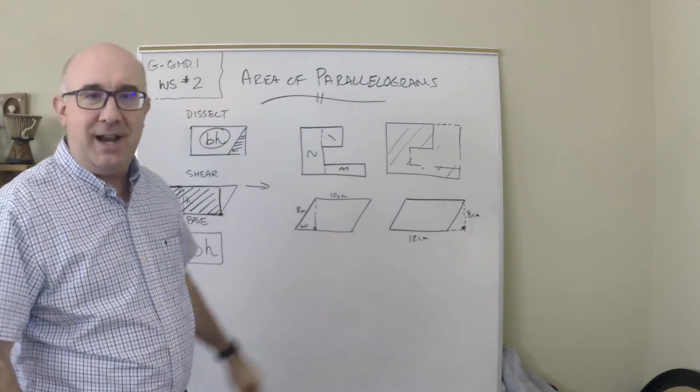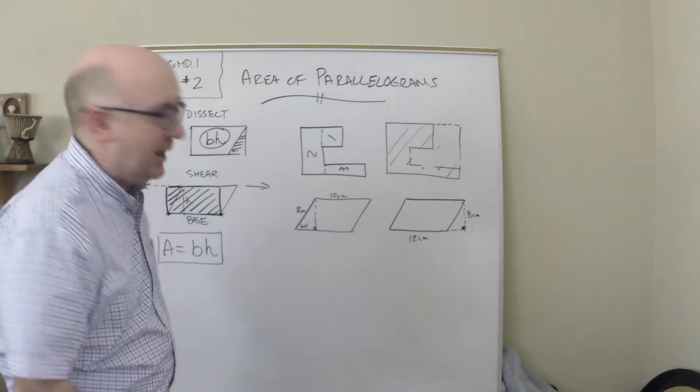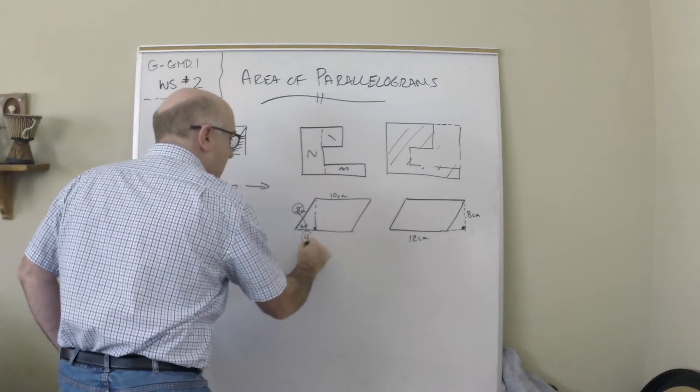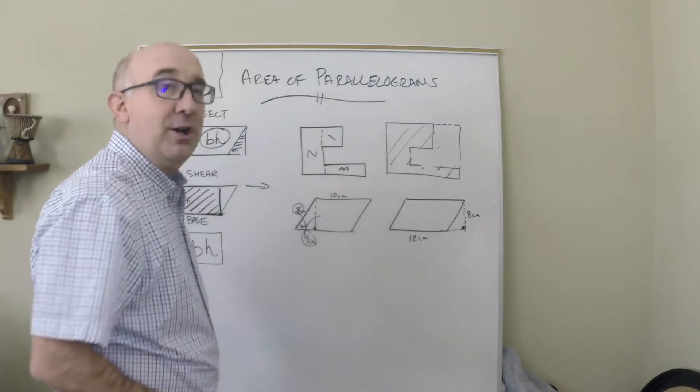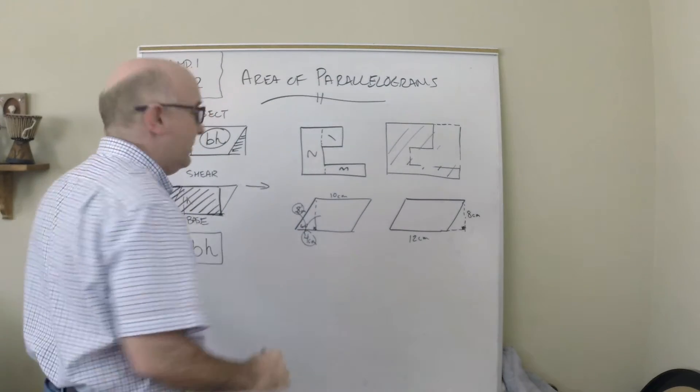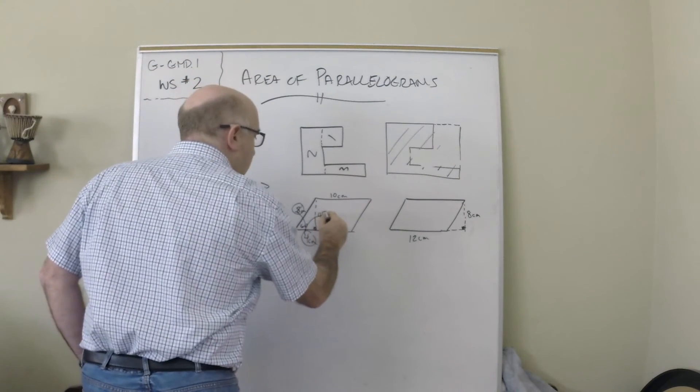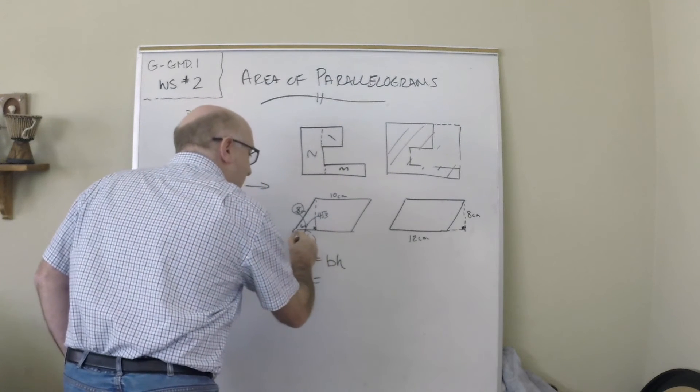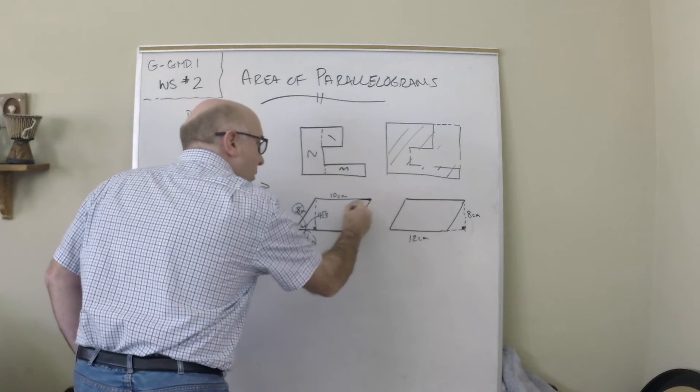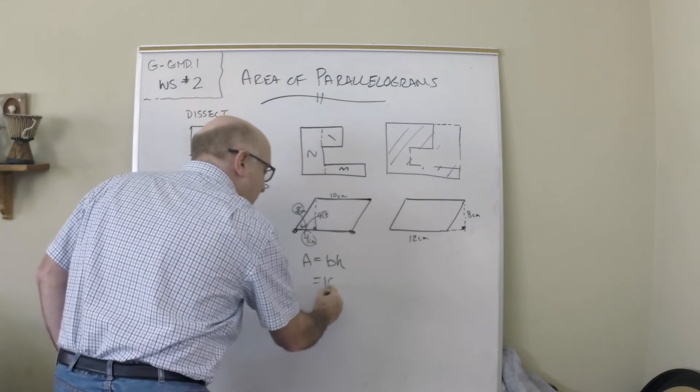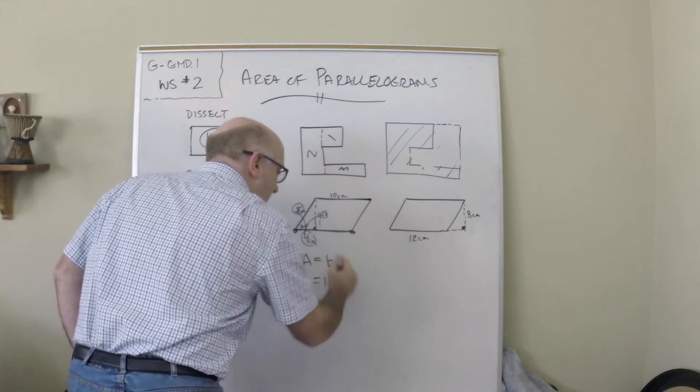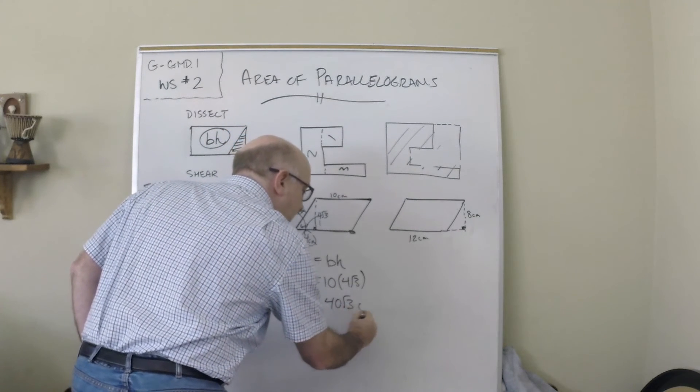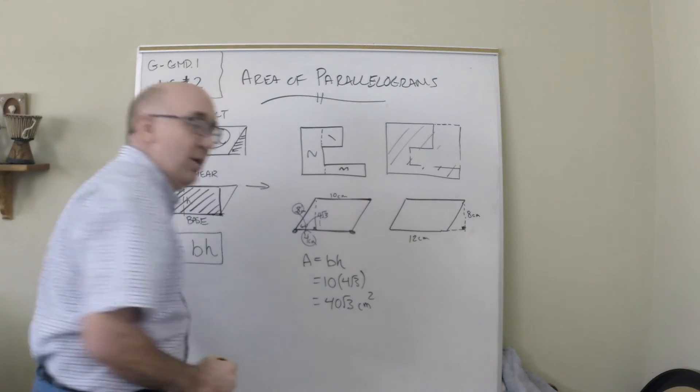Here I see a 60-degree angle special right triangle, and I know that the hypotenuse is double, so this would be four. Then the long side is root three bigger, so that would be 4√3. If I'm doing area as base times height, my base because it's a parallelogram are the same, so that's 10 times the height which is 4√3, and I get 40√3 centimeters squared as the area.